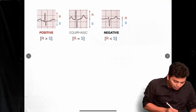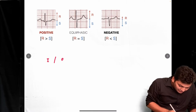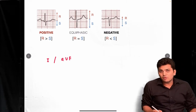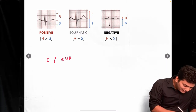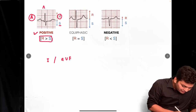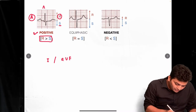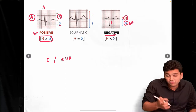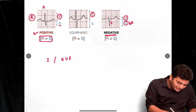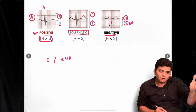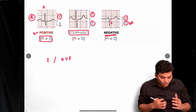We are going to use only two leads: the first standard lead and the AVF lead. You are going to look at the QRS complex. If the R wave is bigger than the S wave, that is called a positive QRS complex. If the S wave is bigger than the R wave, it is called negative. If both R and S are equivalent, it is called equiphasing.